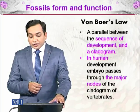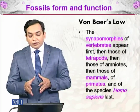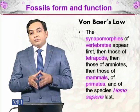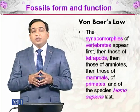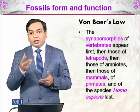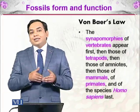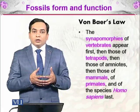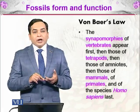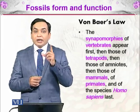The major nodes are ordered so that the synapomorphies of vertebrates appear first, then those of tetrapods, then amniotes, then mammals, then primates, and finally Homo sapiens. Synapomorphies are characteristics shared by one or more clades. For example, tetrapody — having four limbs — is a characteristic shared by birds, mammals, reptiles, and amphibians, making it a synapomorphy that defines the clade Tetrapoda.